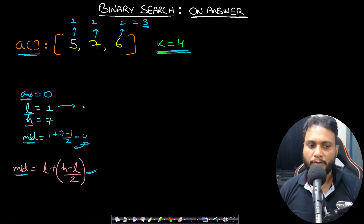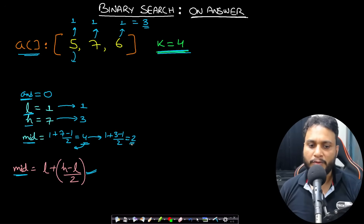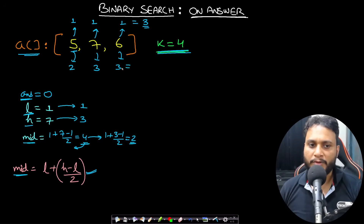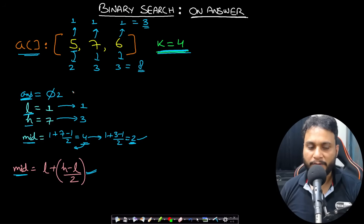Check two candies: pile five gives two kids (5÷2), pile seven gives three kids (7÷2), pile six gives three kids (6÷2) — total eight, which is greater than or equal to four. Two works, so save answer = 2 and set low = mid + 1 = 3. High is already 3, so mid = 3. Check three candies: pile five gives one kid, pile seven gives two kids, pile six gives two kids — total five, greater than or equal to four. Three works.